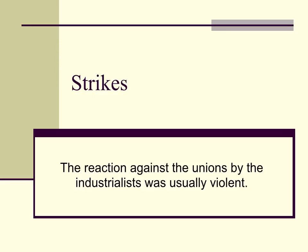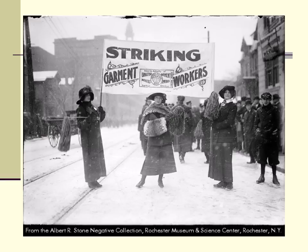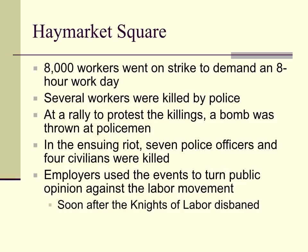When workers didn't agree with how they were being treated by industry leaders, they went on strike and refused to work. The reaction from industrialists was usually very violent. At Haymarket Square, 8,000 workers went on strike to demand an eight-hour workday. Several workers were killed by police, and at a rally protesting the killings, a bomb was thrown at policemen. In the ensuing riot, seven police officers and four civilians were killed. Employers used the events to turn public opinion against the labor movement, and the Knights of Labor soon disbanded.